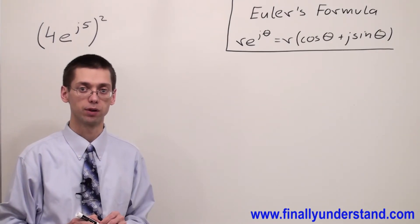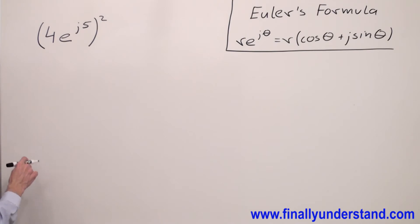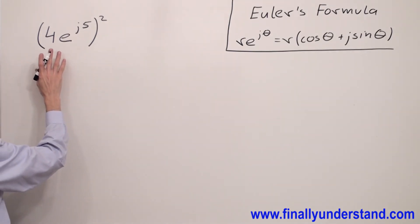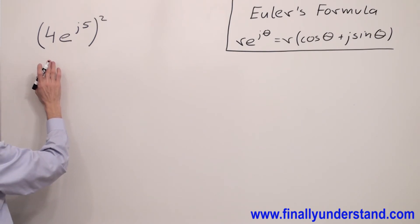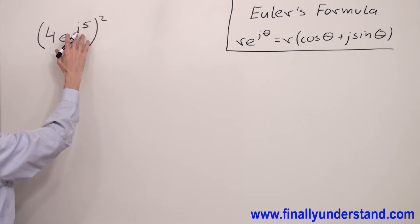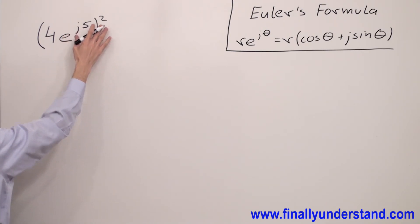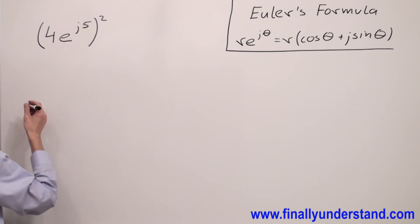This time we're supposed to raise to the second power the complex number expressed in exponential form. You're supposed to apply the properties of exponents — simply raise your magnitude to the second power and multiply the exponent by the external exponent.